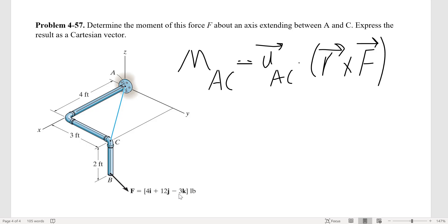This problem has given us the vector F, the force in Cartesian form, so we only need to find UAC and R. The unit vector from A to C, UAC, is simply the position vector divided by its magnitude.